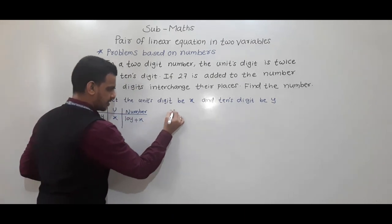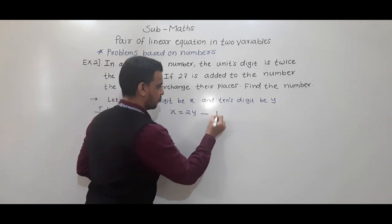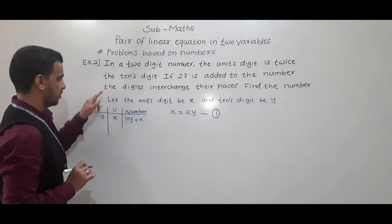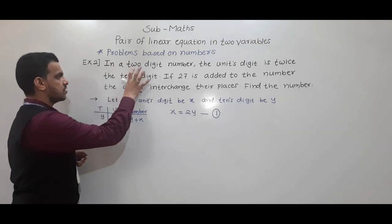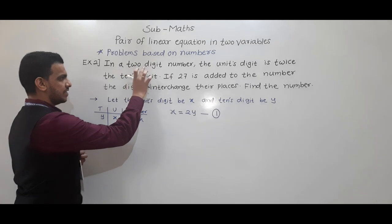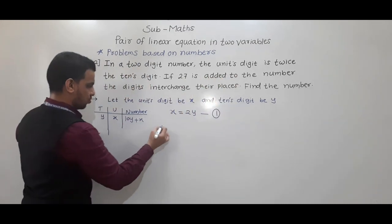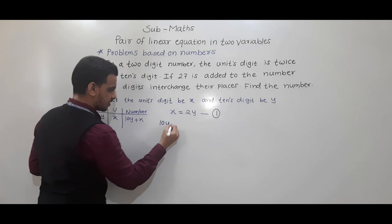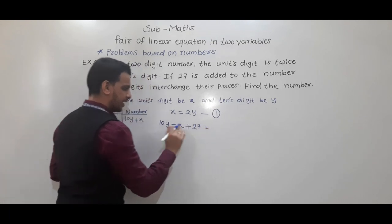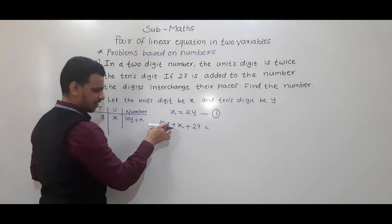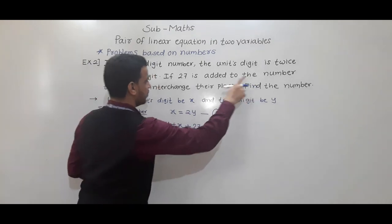Units digit means x is equal to twice the tens digit, so x equals 2y. This is the first equation. For the second condition: if 27 is added to the number — the original number is 10y plus x — we will get another number. If 27 is added to the original number, we get a new number.